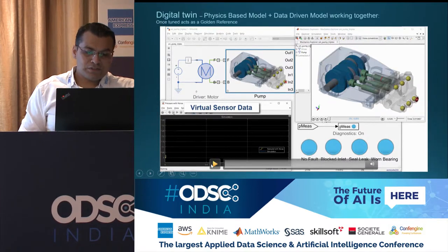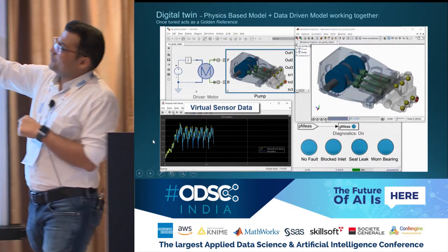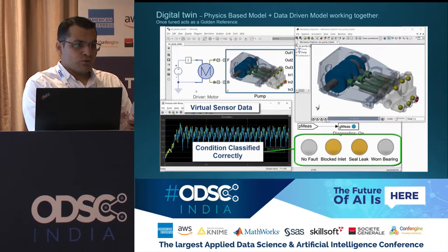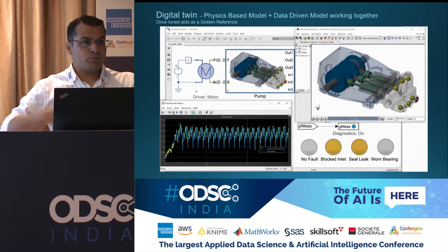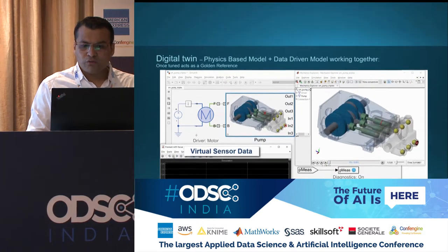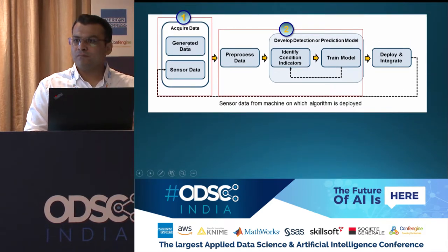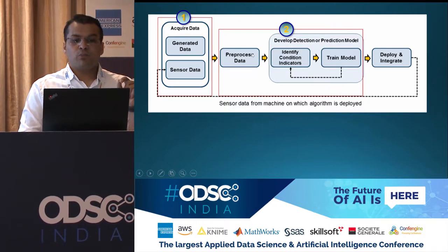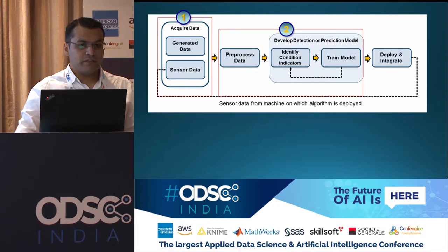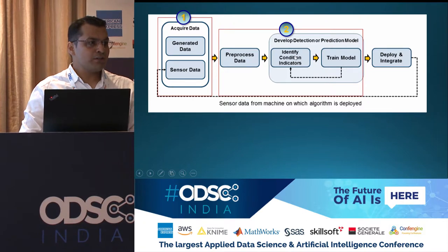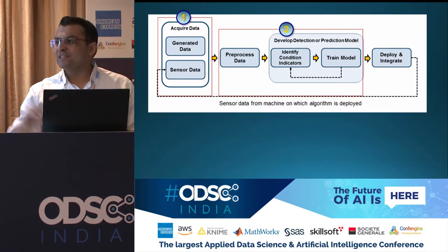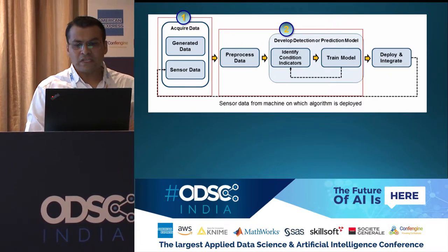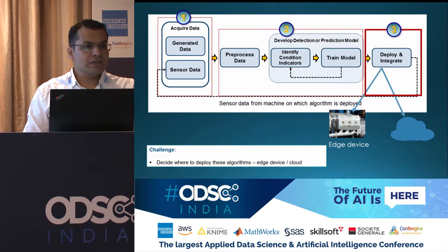Coming back to this particular part: once you have built such a system — a digital twin which has physics as well as an AI model bridged together — and once it is tuned, it can be directly shipped or put into production. What we have done so far: we started with generating data, mixed that with sensor data which was operational healthy data. We used a physics-based model. Then we got into pre-processing — only two problems we had, spikes and offset, and we dealt with that. Then identifying features — you might need to look into time domain, frequency domain. Then we compared various different machine learning classification techniques. Now it is ready for the last part: deployment.